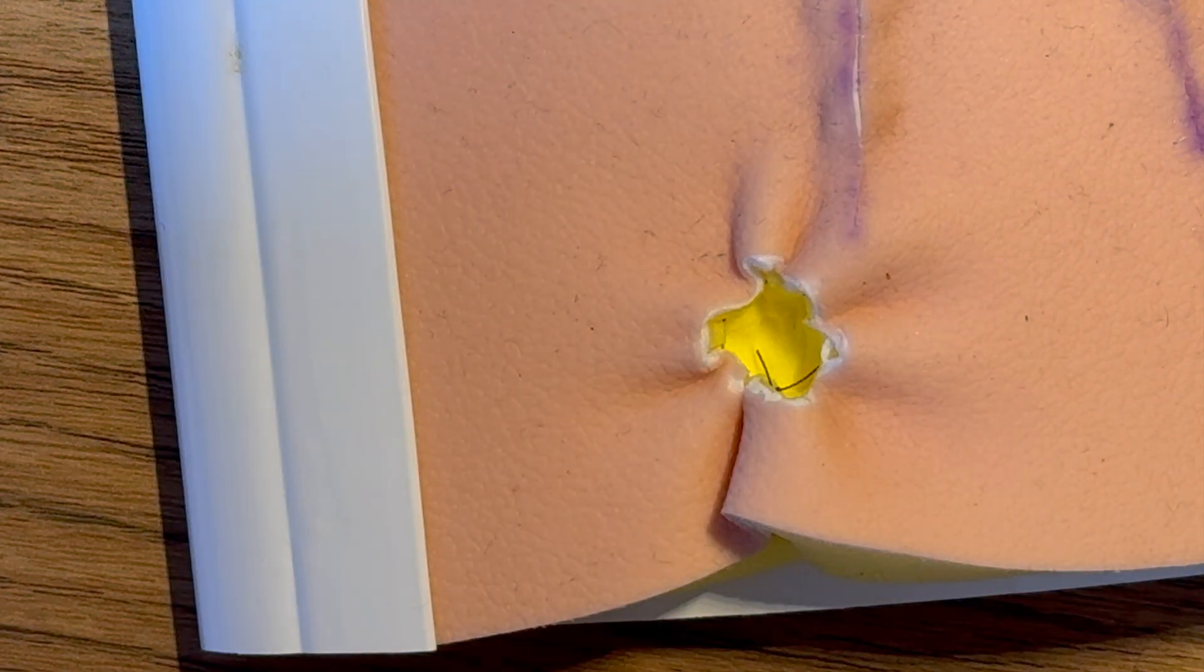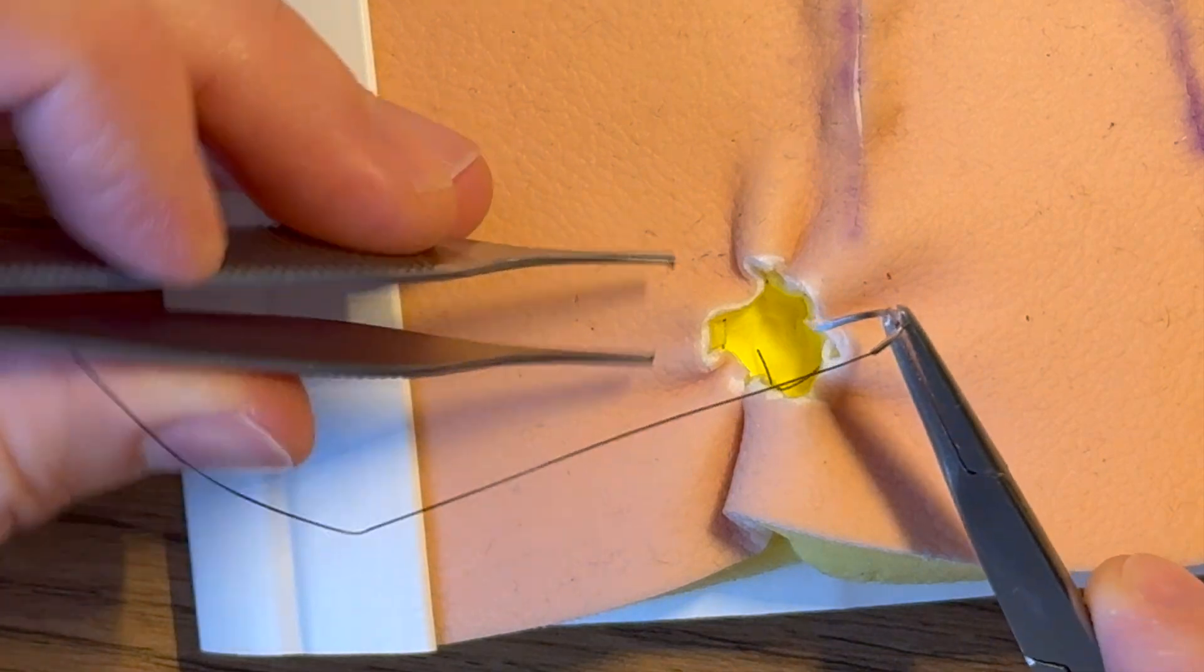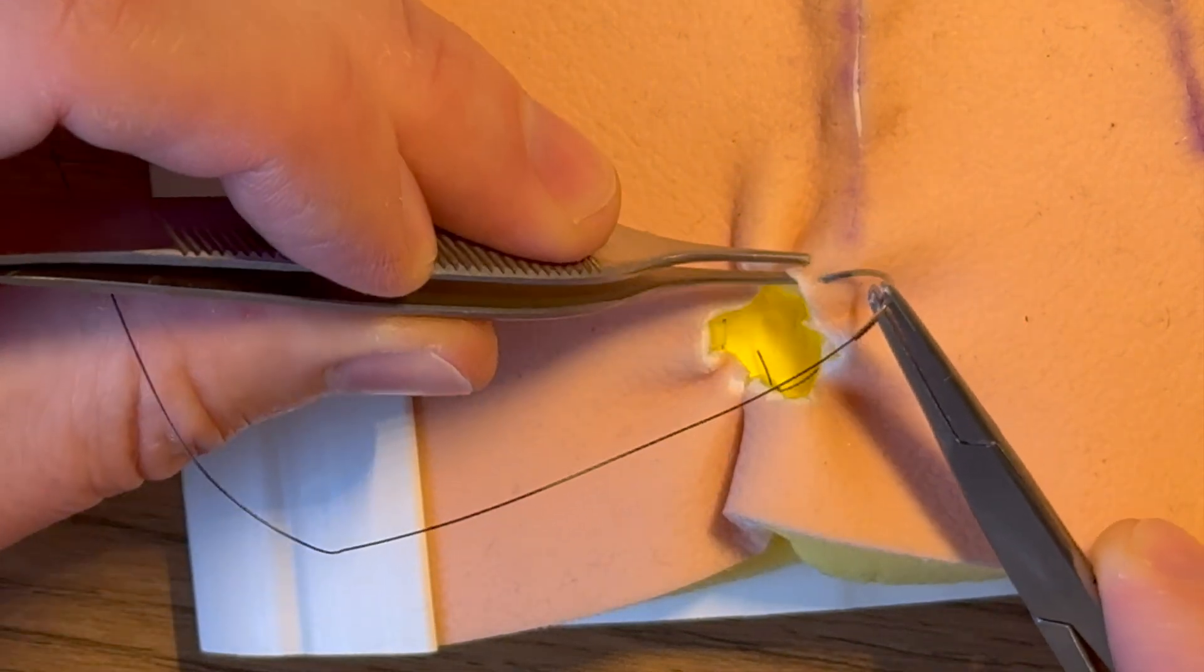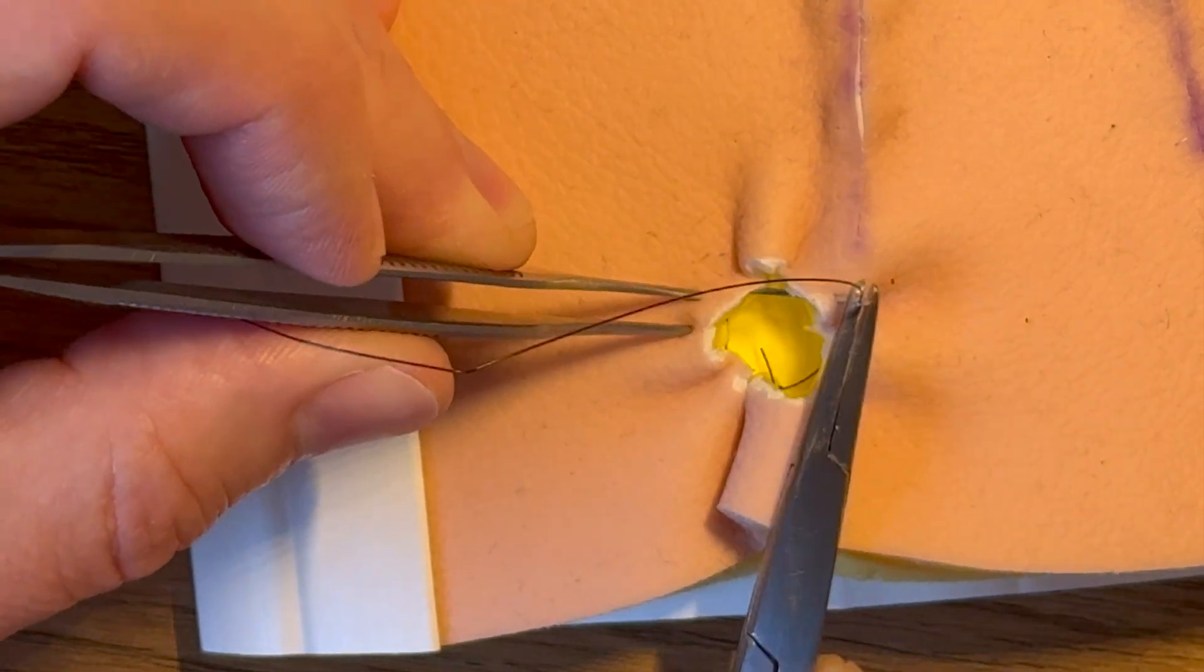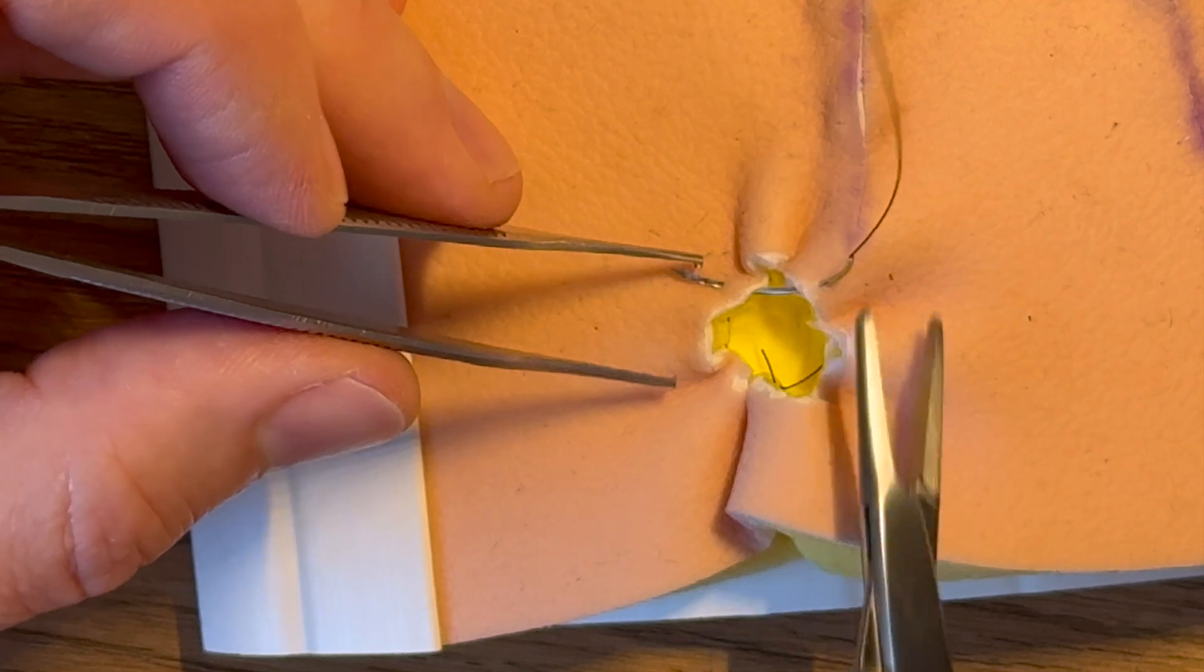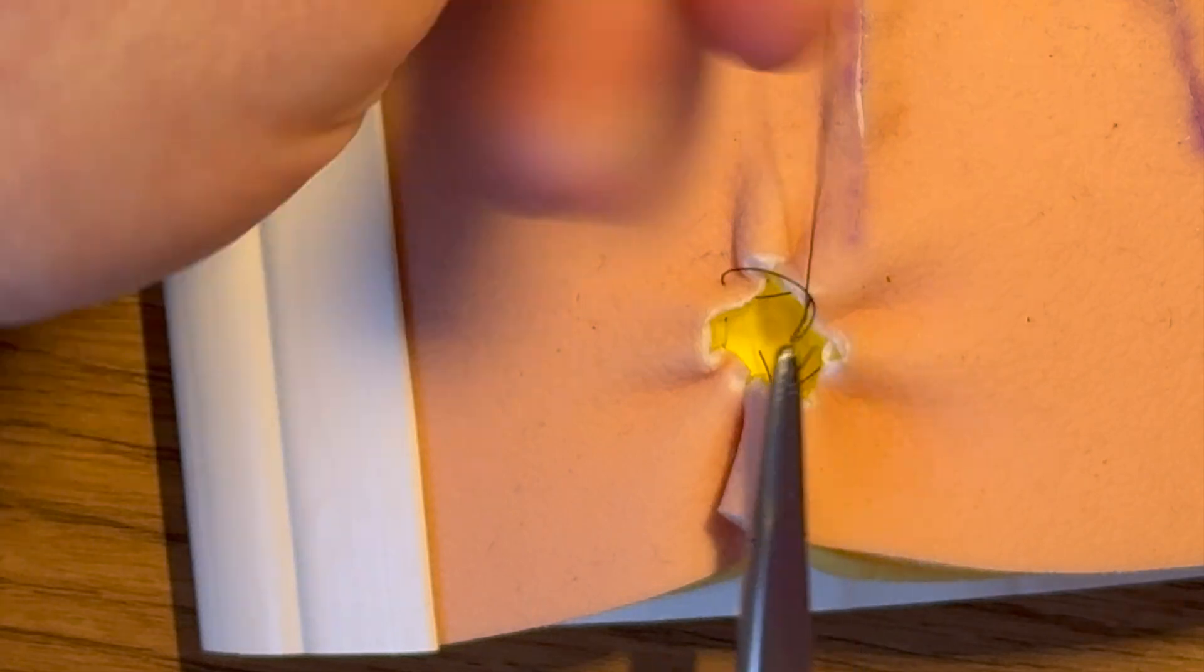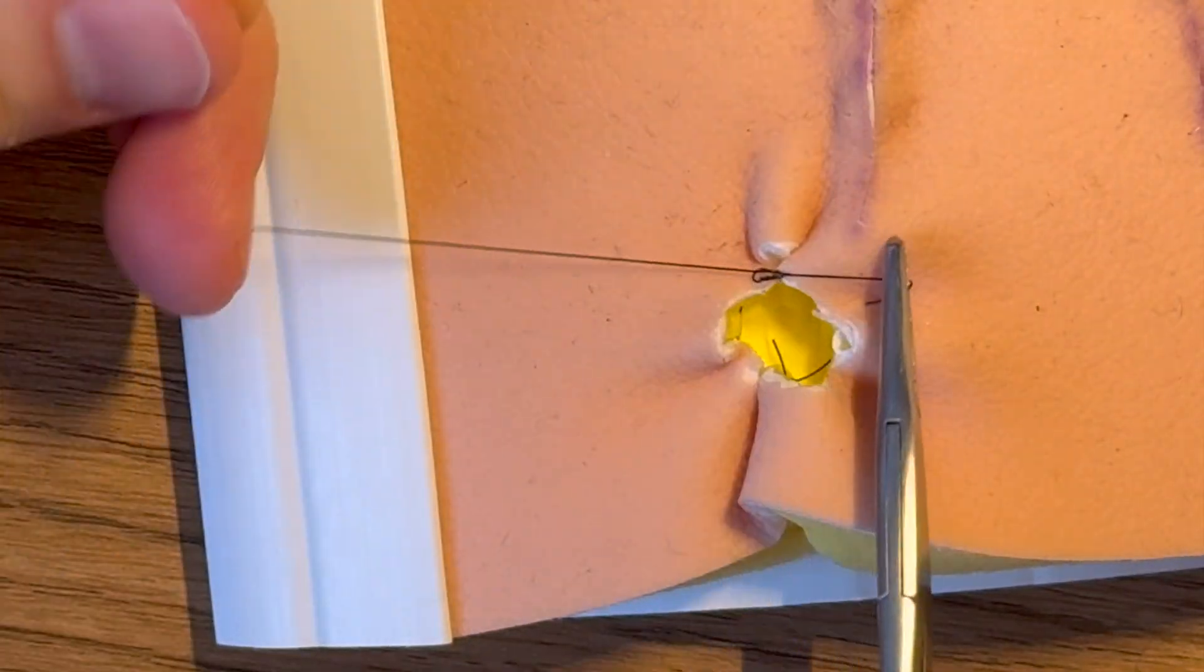So sometimes you get to this stage and you feel actually I've very very nearly closed it together and then I actually think well it's going to heal even quicker if we can close some of these little bits. So you might put a little stitch in here, bring a little stitch in, just make sure you don't collide with your purse string stitch underneath. And you might just close it a little bit more and it's still going to look odd but it's going to heal a little bit quicker.